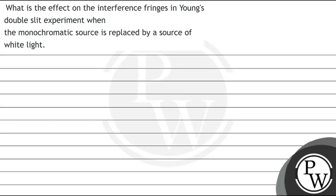Hello! Let's see this question. It says: what is the effect on the interference fringes in Young's double slit experiment when the monochromatic source is replaced by a source of white light?